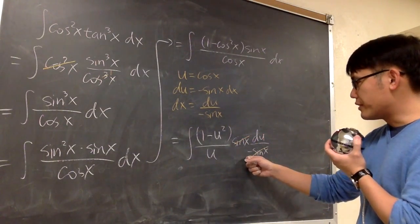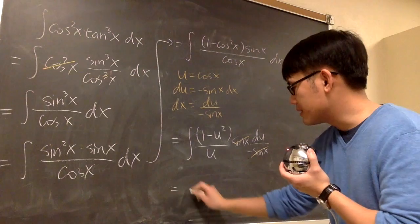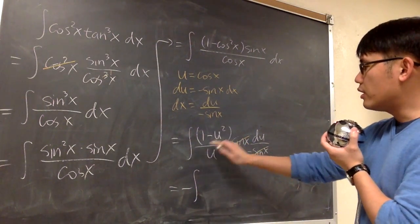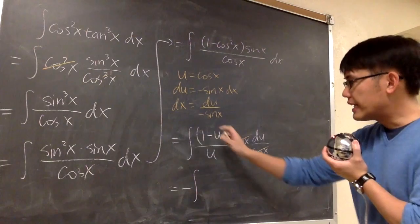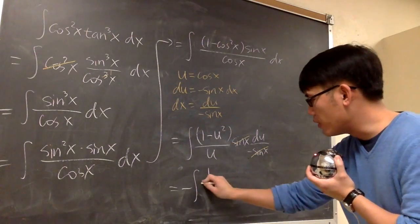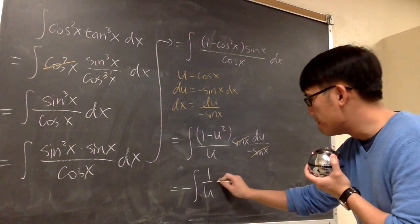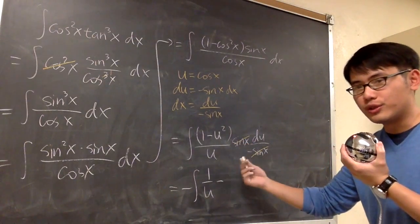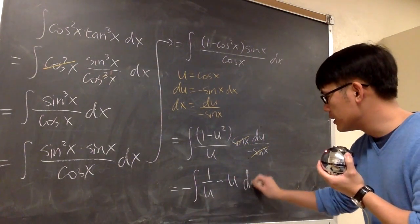We have a negative right here. You can take it to the outside, negative integral. And inside, it's just 1 minus u squared over u, du. I can split the fraction, look at this as 1 over u, and then minus u squared over u, which is just u. du.